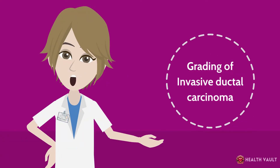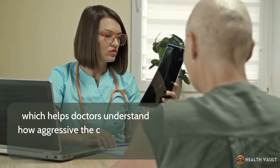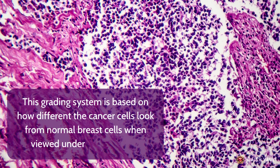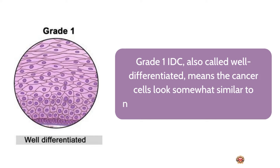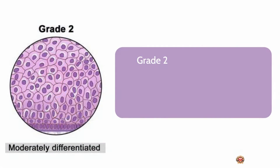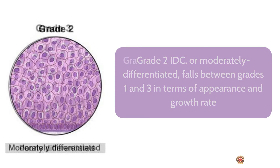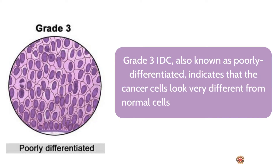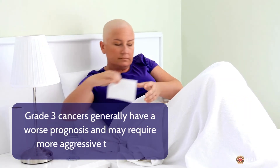If IDC is diagnosed, the pathologist will also determine the grade of the cancer, which helps doctors understand how aggressive it is likely to be. This grading system is based on how different the cancer cells look from normal breast cells under a microscope. Grade 1, also called well differentiated, means the cancer cells look somewhat similar to normal cells and are growing slowly, and these cancers tend to have a better prognosis. Grade 2, or moderately differentiated, falls between grades 1 and 3 in terms of appearance and growth rate. Grade 3, also known as poorly differentiated, indicates that cancer cells look very different from normal cells and are growing rapidly, generally carrying a worse prognosis and potentially requiring more aggressive treatment.